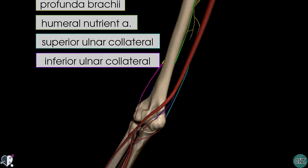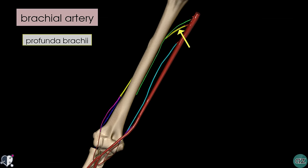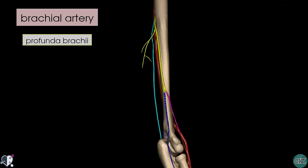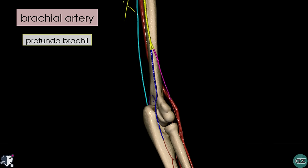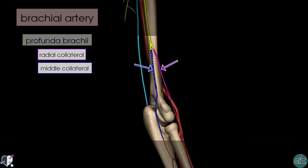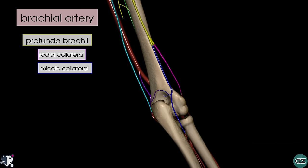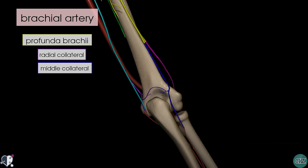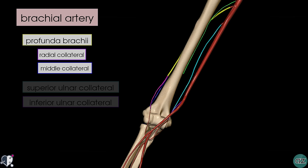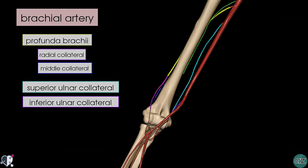The profunda brachii artery, which we saw in yellow, is the largest branch and passes posteriorly to supply the posterior compartment of the arm. The profunda brachii artery terminates by dividing into two branches: the radial collateral artery in purple, and the middle collateral artery in blue. So we've now looked at four collateral arteries: the superior and inferior ulnar collateral arteries, which arise directly from the brachial artery, and the middle collateral artery and radial collateral artery, which arise from the profunda brachii artery.